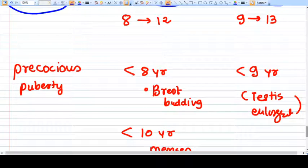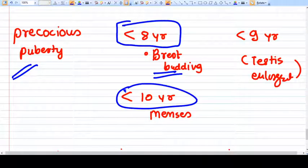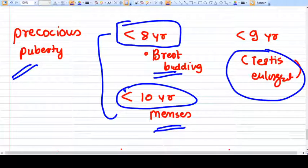Precocious puberty is defined as less than eight years for development of breast budding, and less than 10 years for the start of menses. In males, testicular enlargement before nine years is called precocious puberty.